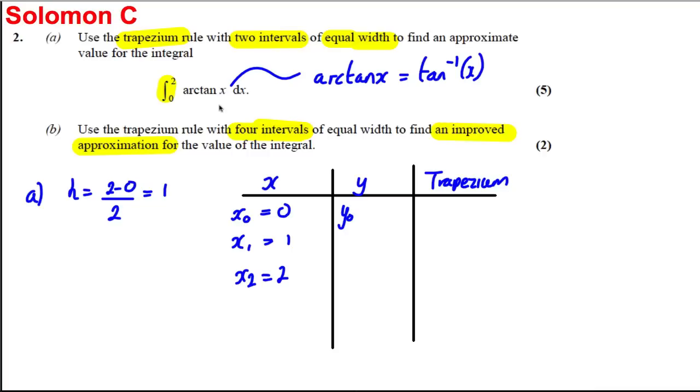Arctan of 0, and when we do arctan of 0 we get 0. Then y1 is going to be the arctan of 1. So arctan of 1, which is going to be equal to pi by 4. And then y2 is going to be the arctan of 2. So arctan of 2, which is not a nice fraction, is 1.107148. That should do us for now.